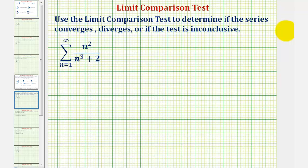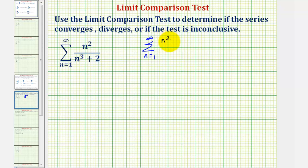We want to use the limit comparison test to determine if the infinite series converges, diverges, or if the test is inconclusive. Let's begin by determining what infinite series we know converges or diverges that resembles the given series. Notice how the given series resembles the summation from n equals one to infinity of n squared divided by n cubed, which simplifies to the summation of one divided by n — the harmonic series, which diverges by the p-series test with p equals one.